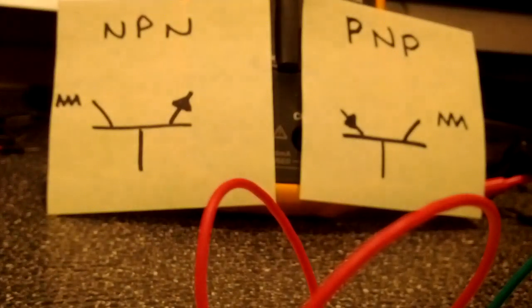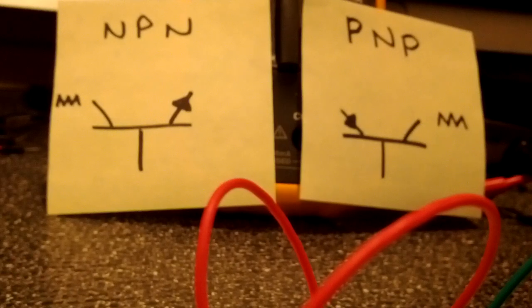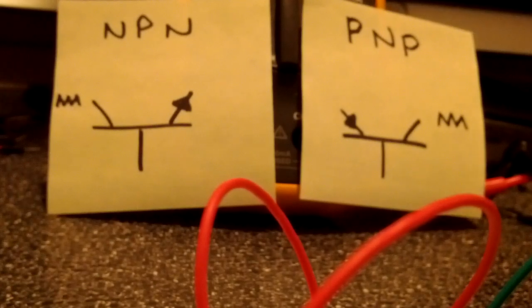They're essentially exactly the same. The difference is that the sandwich is made up differently. They're semiconductors. With NPN there's negative on the outside and positive on the inside, and with PNP it's positive on the outside and negative on the inside.